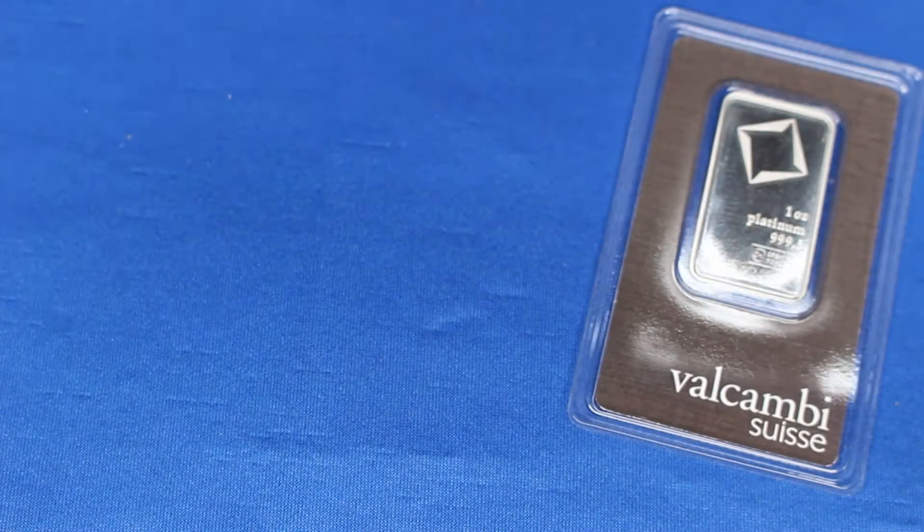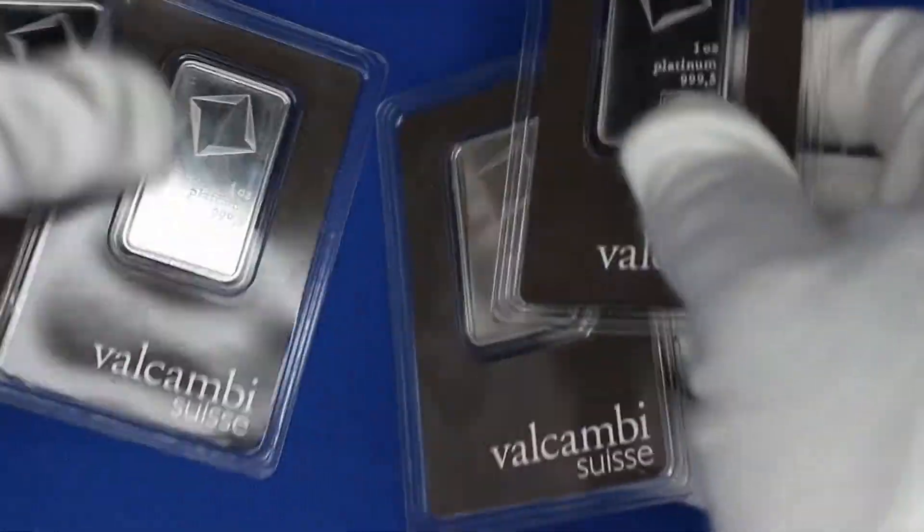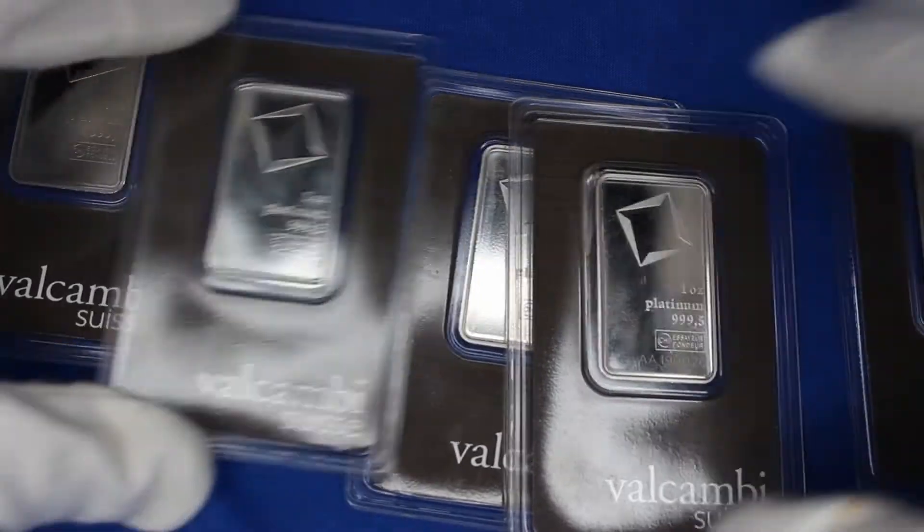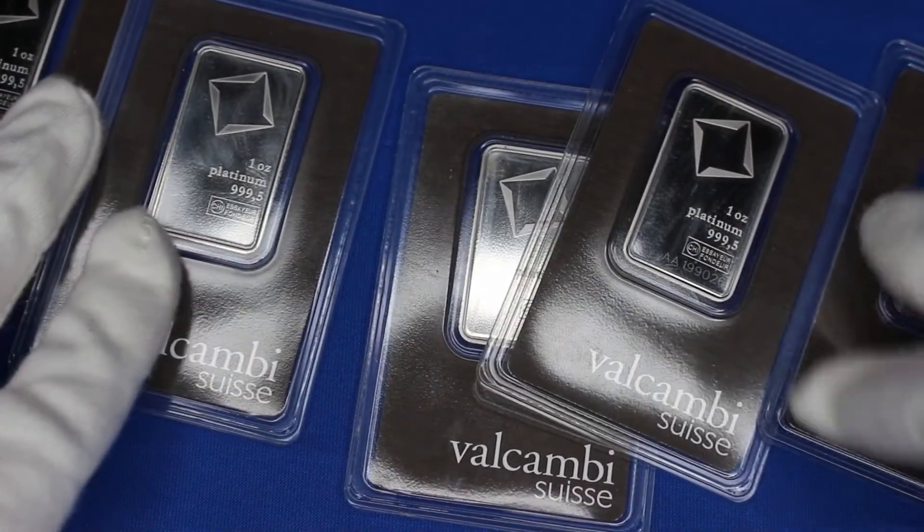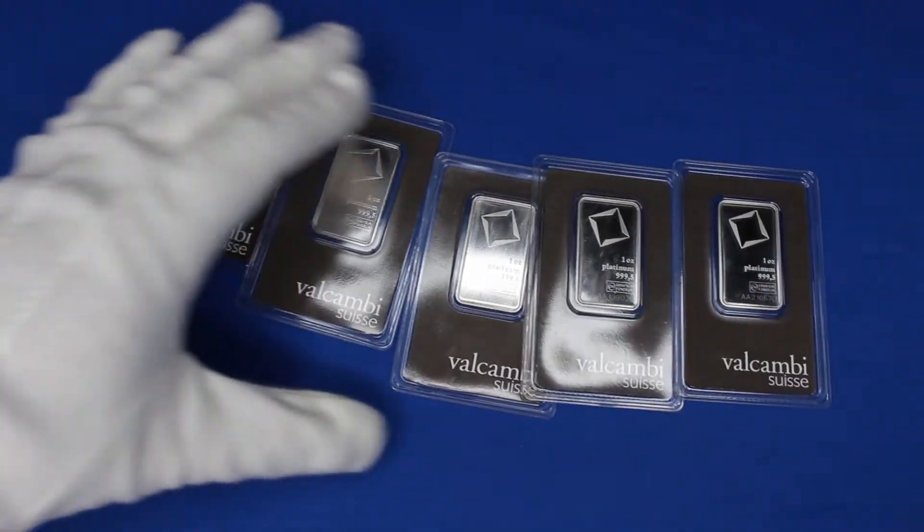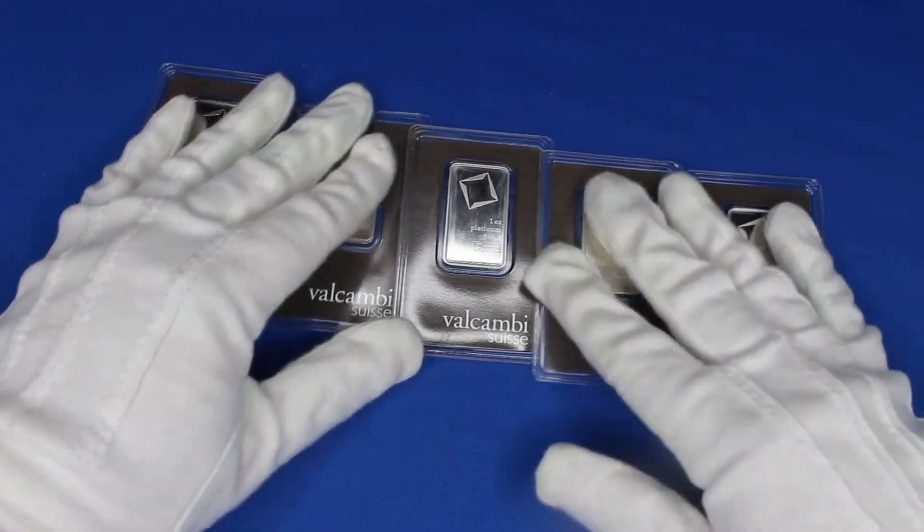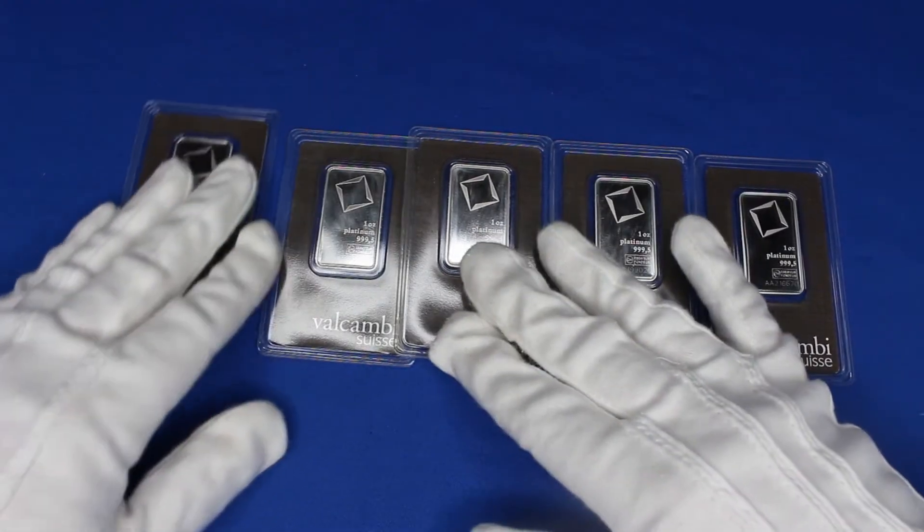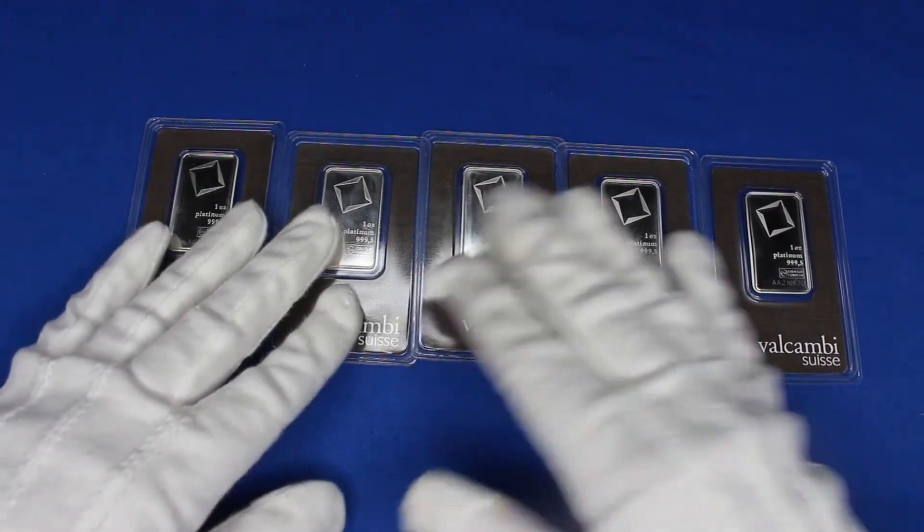There are other metals that are not well known that can be examples of this, and we see what happens in supply crunches. Iridium, for example, increased in price by over 10 times between 2020 and 2021. Rhodium increased by about 40 times in price between 2018 and 2021.